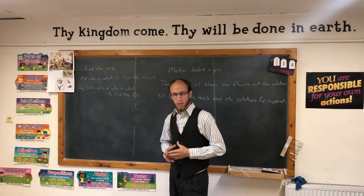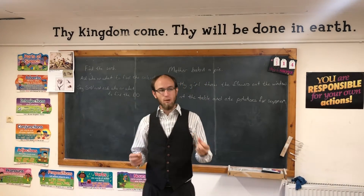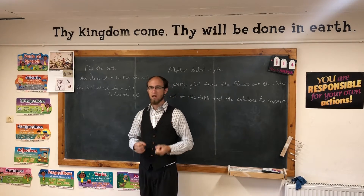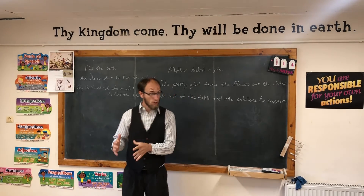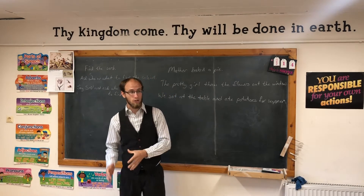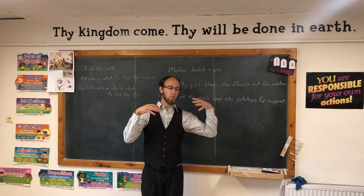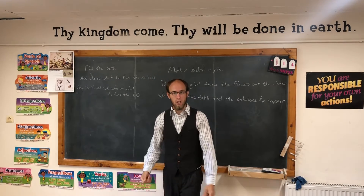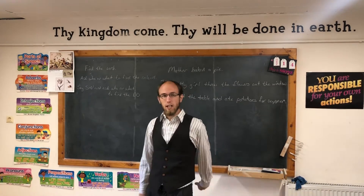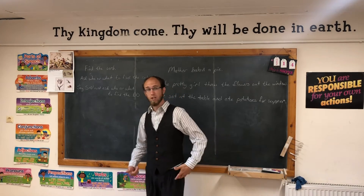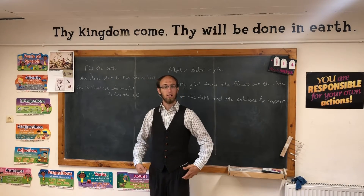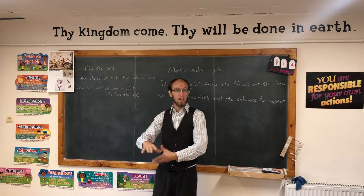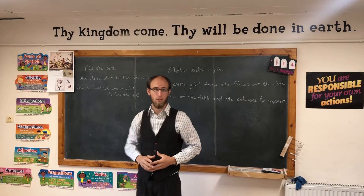Today I'm going to talk about direct objects. The direct object is something in the sentence that receives the action. So we need to have an action verb doing the action, and then there's something that receives the action. If you're playing soccer and you say, 'I kicked the ball' — what receives the action? The ball. I kicked the ball. The ball is the direct object.